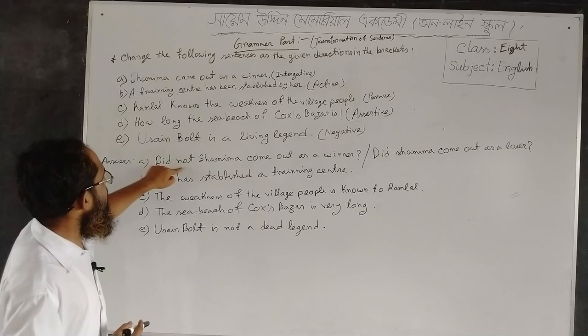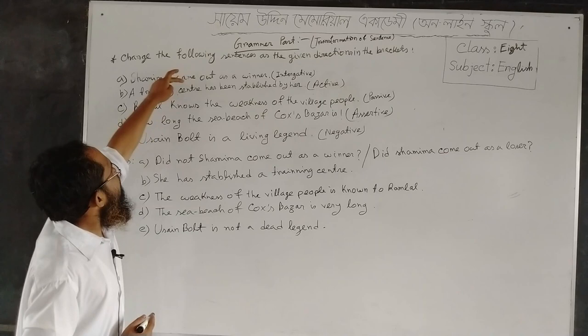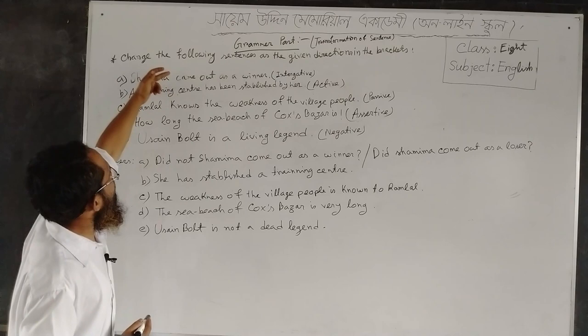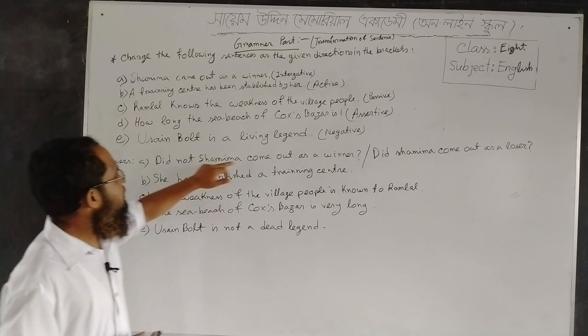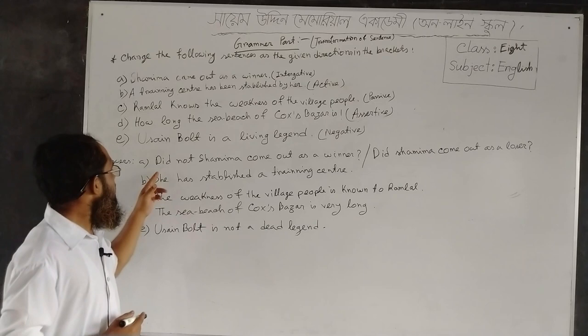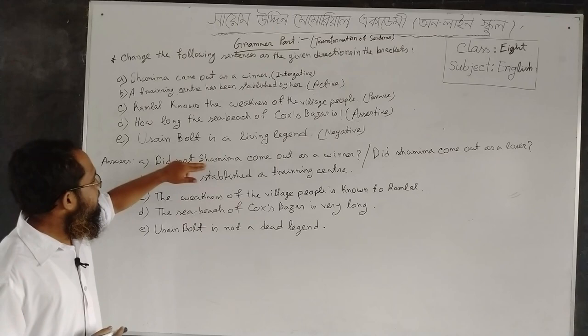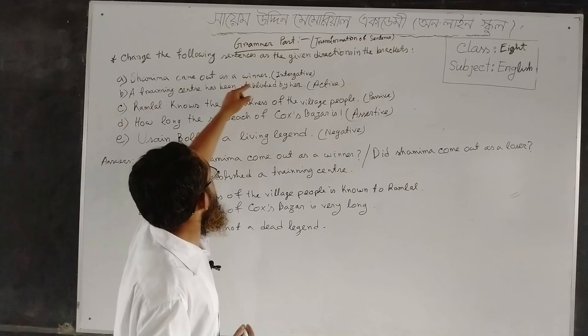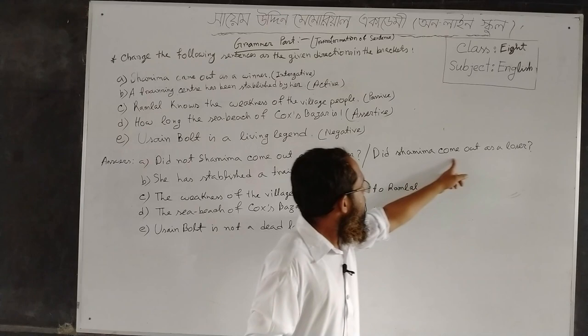Did not Shamima come out as a winner? Here you have no word 'not' in the original sentence, so you have to take 'not'. If there was already a 'not', you don't have to take this word. Did not Shamima come out as a winner? It's an interrogative sentence — actually it's a negative interrogative sentence. If you want to change this sentence as a simple interrogative sentence, you can also use this answer.